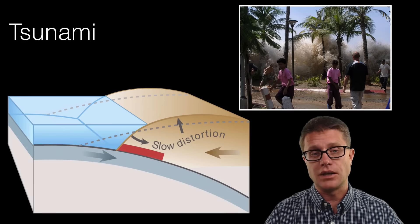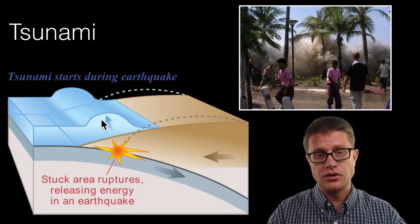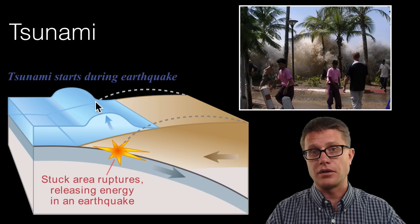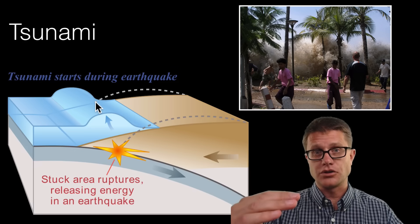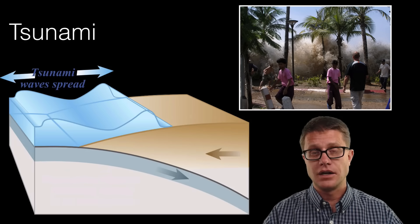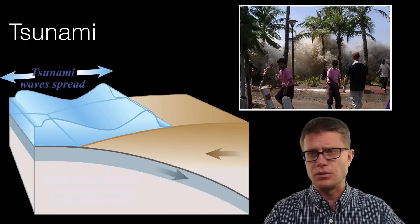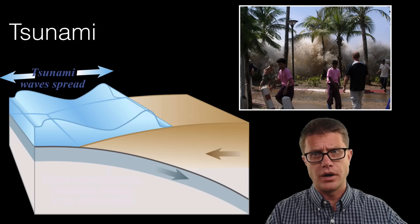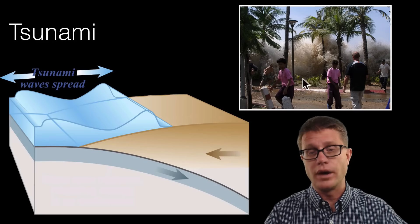And then eventually when it slips what we get is a huge push up on the water above it. So you get this vertical motion in the ocean and that leads to these giant tidal waves. And so if you are near the ocean you would also suddenly notice that the ocean is going way out. And then it is going to come way in. And there are really bad consequences from that.